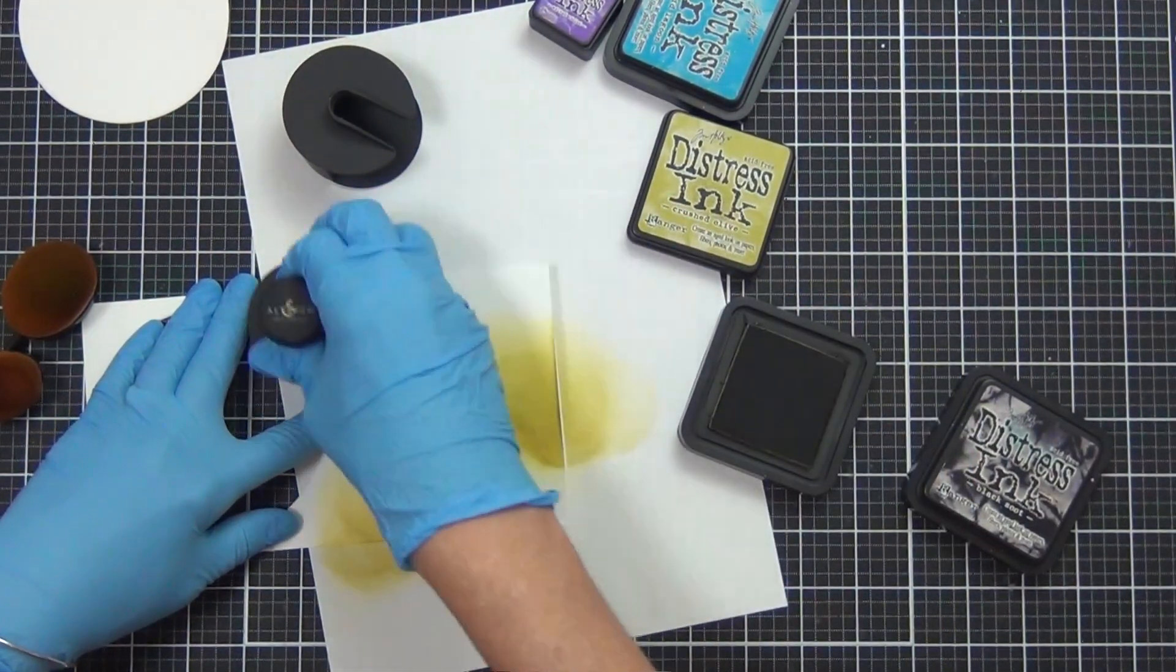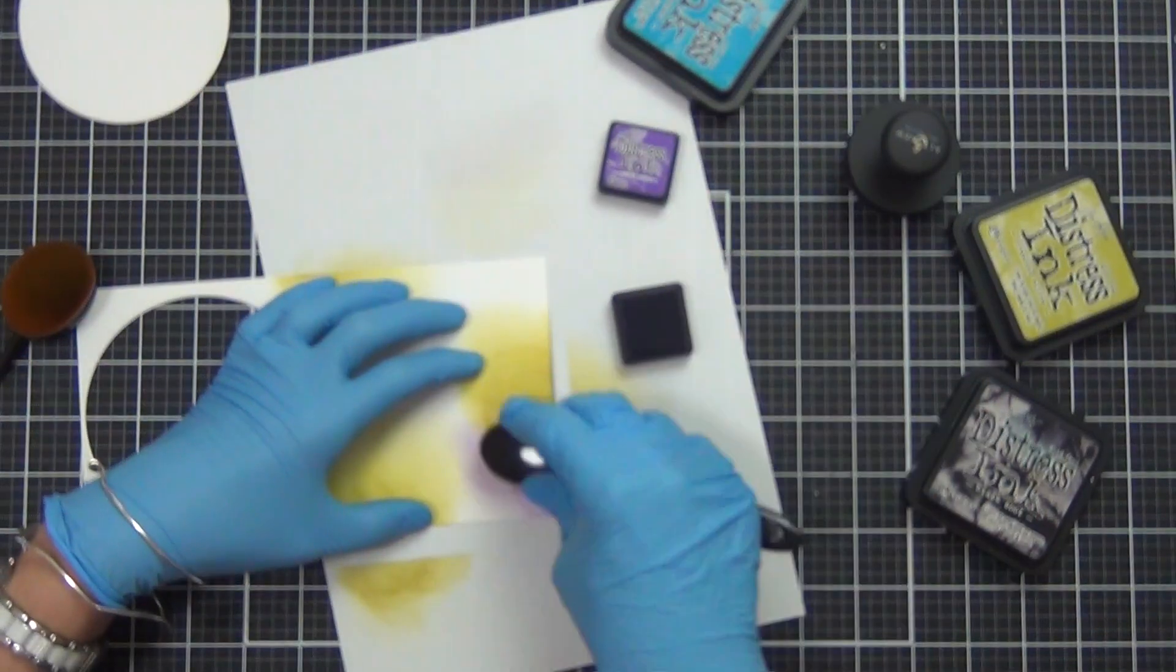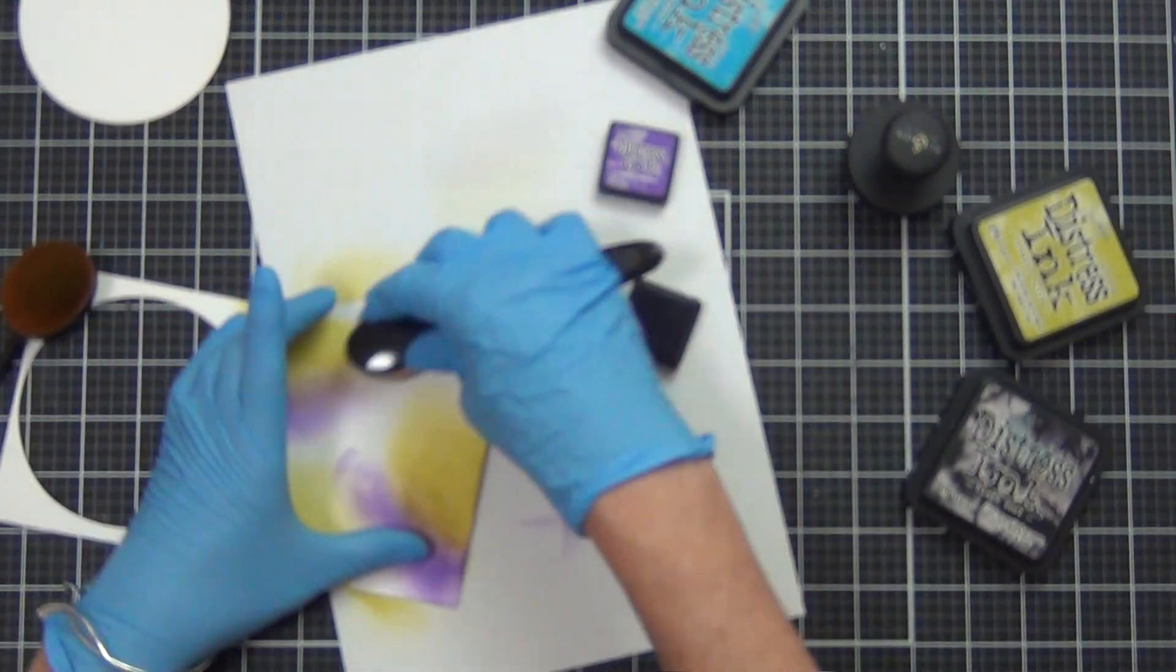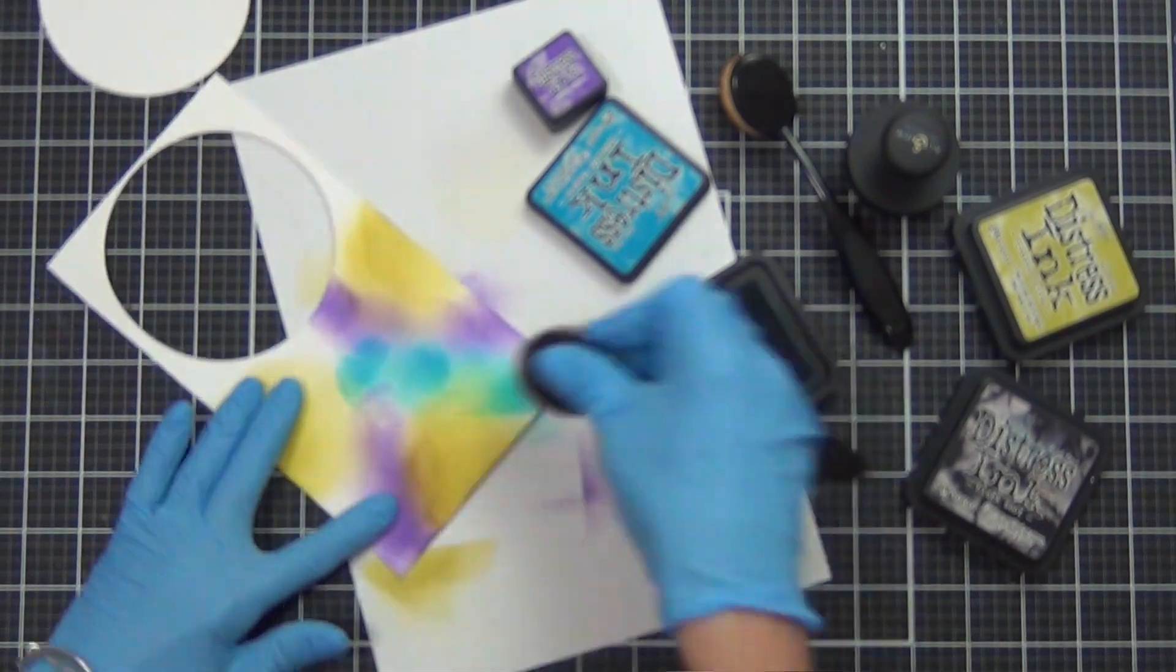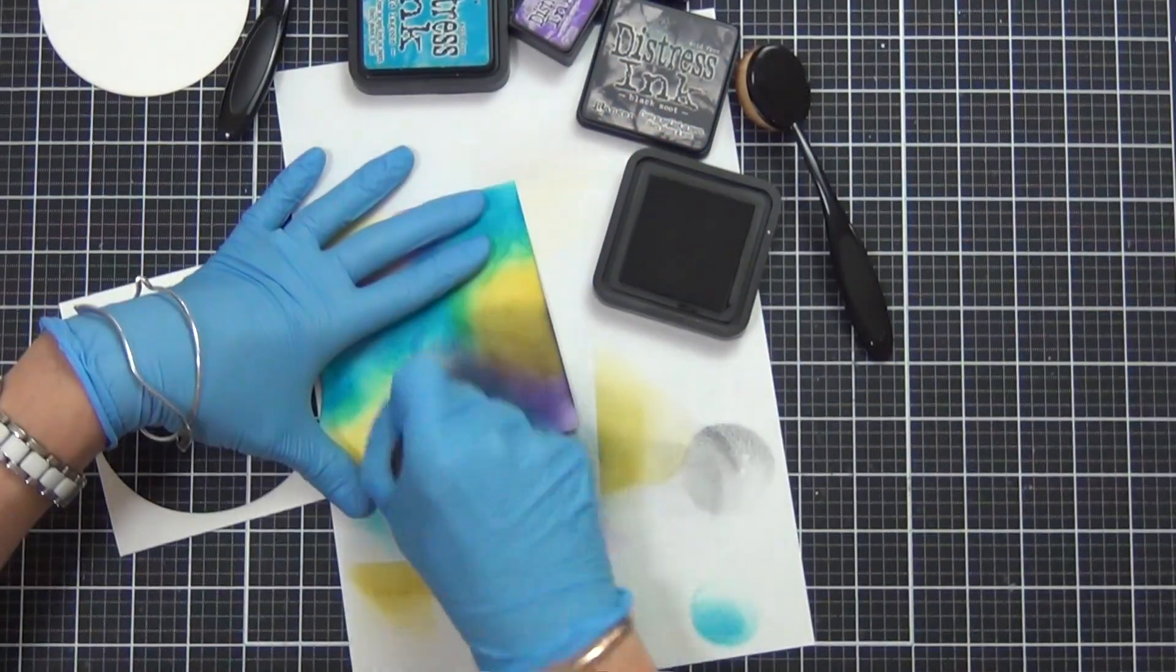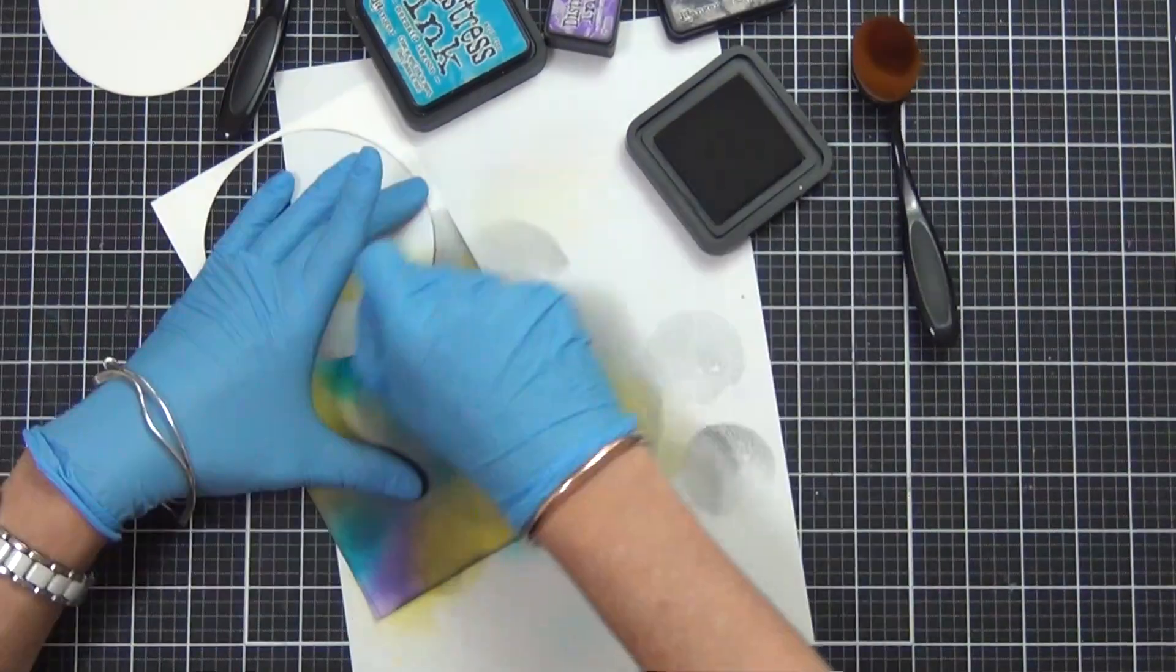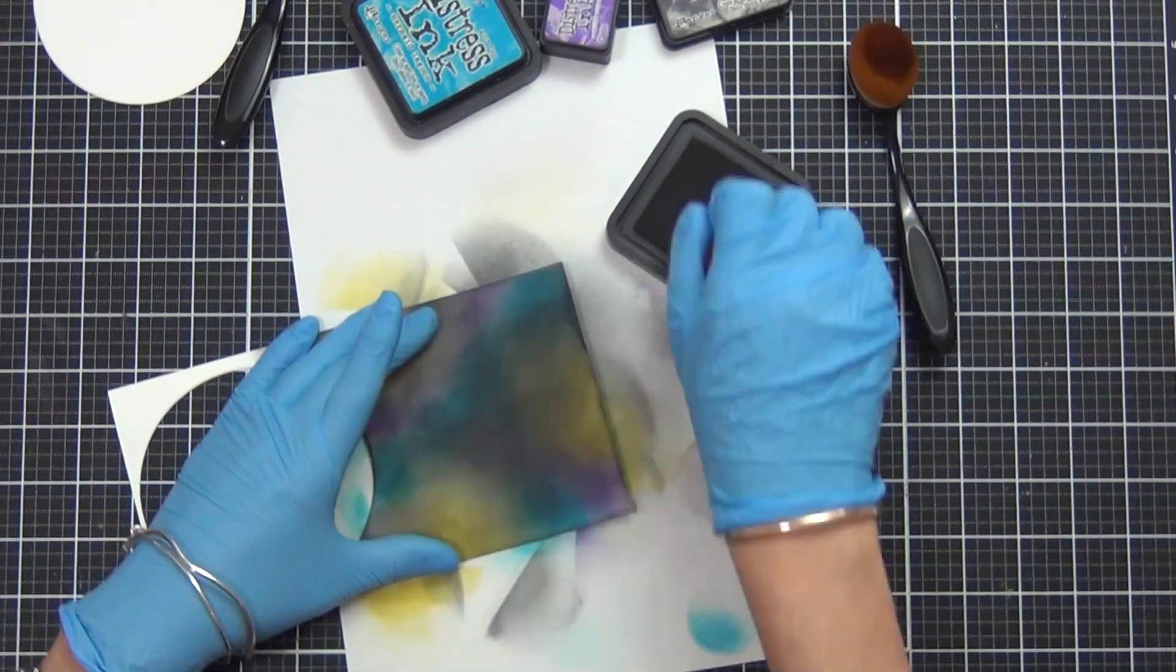That's what I'm creating here. I've used my ink blending tools, both my Altenew and my life-changing blender brushes here, and grabbed some beautiful bright distress ink colors. I'm working on some Neenah 110 pound cardstock and I'm adding lots of color here.